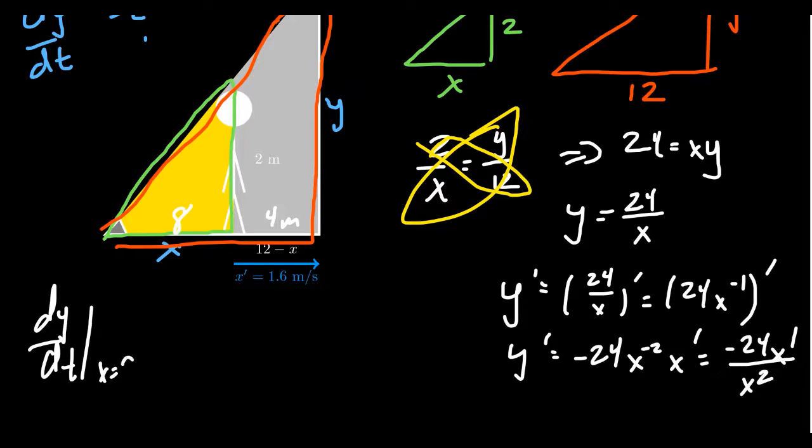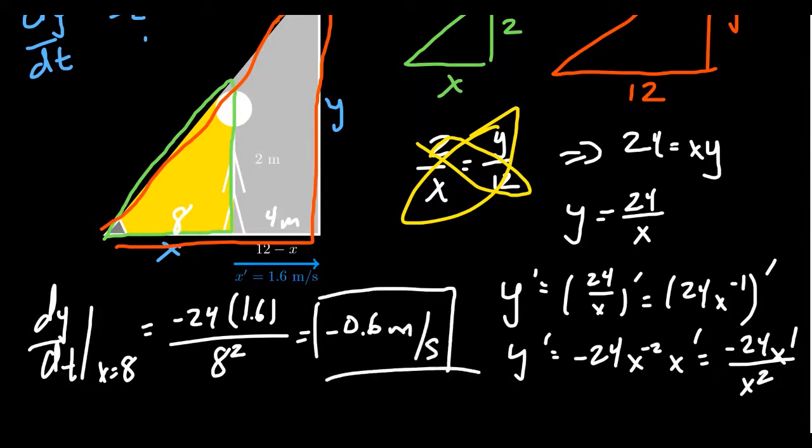So we need to figure out what the derivative is when x equals eight. So plugging these things in here, we get negative 24 times x', which is going to be 1.6. And this sits above eight squared. For which then if we try to simplify this thing, I won't bother you with the arithmetic too much, but this will simplify to be a negative 0.6 meters per second. And we should expect this to be negative because after all, as the man gets closer and closer to the wall, the shadow is going to get smaller, smaller, smaller. So therefore, since the shadow is decreasing, we should expect a negative derivative here.